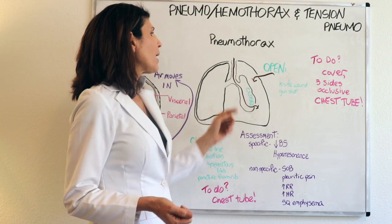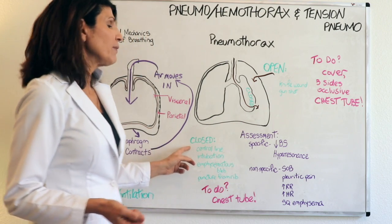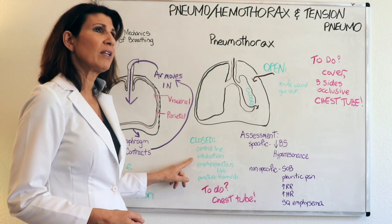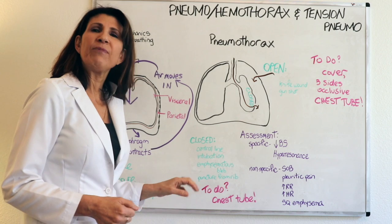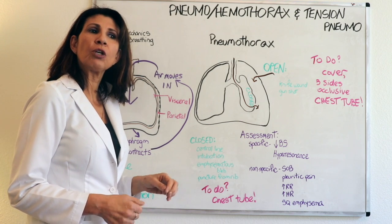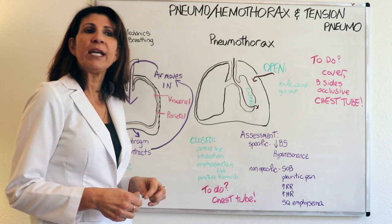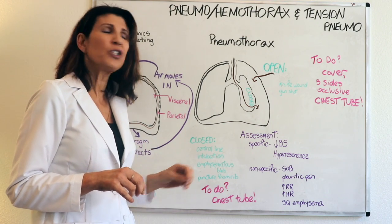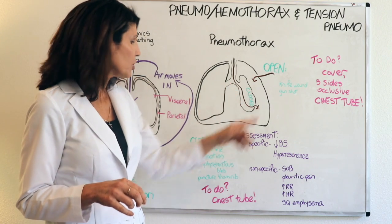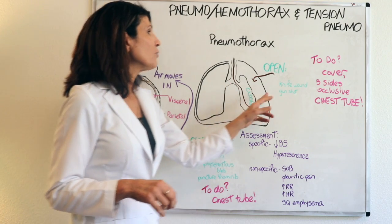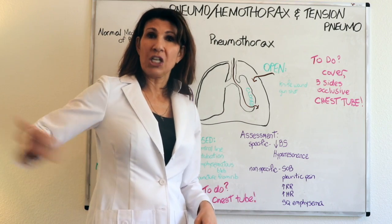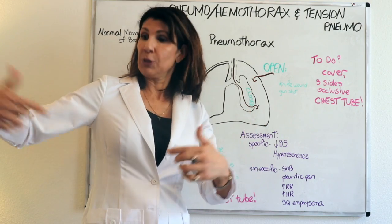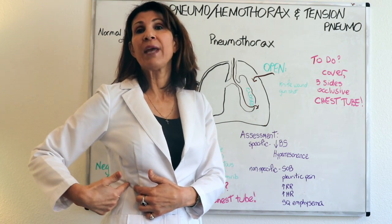Some reasons that could cause a closed pneumothorax include things like central line insertion, mechanical intubation that is traumatic, or emphysematous blebs. It's common with COPD patients where little pockets of scar tissue form and then the tissue bursts open, enabling air to rush into the pleural space. Reasons for an open pneumothorax include gunshot wounds and stab wounds, where air from the atmosphere rushes into the pleural space.